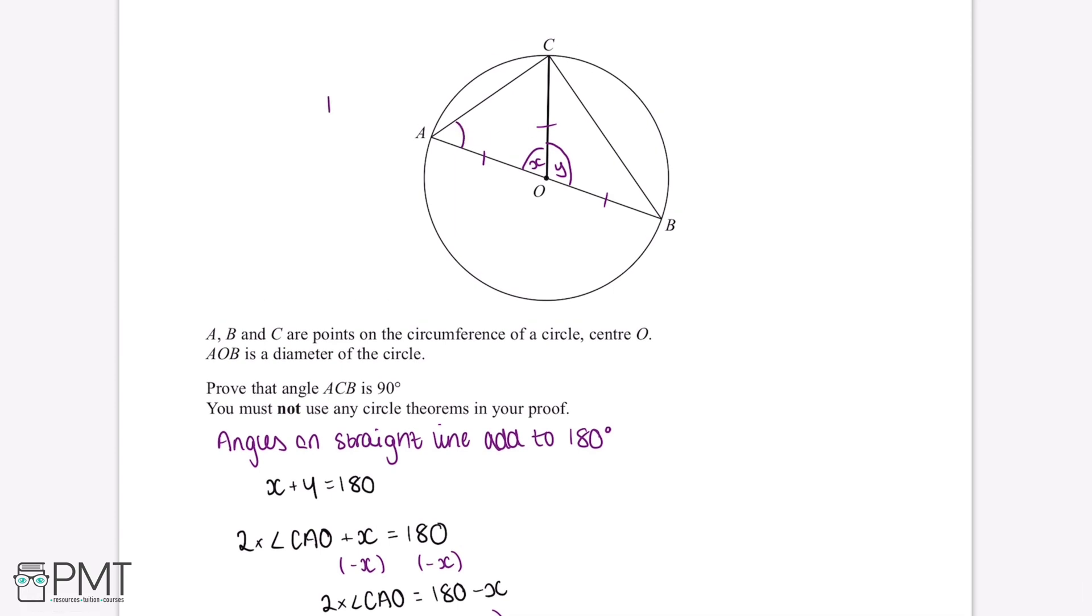We can write this into our diagram. If we use the same process for angle ABC, in which angle OCB and angle ABC are equal, then this makes angle ABC equal to 180 minus Y divided by 2 degrees.